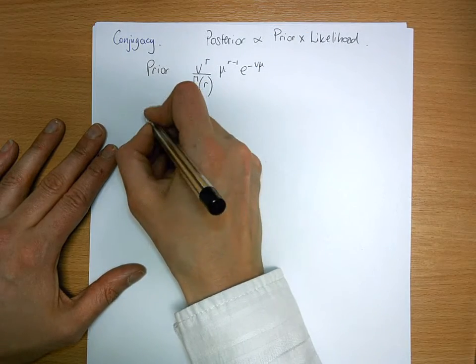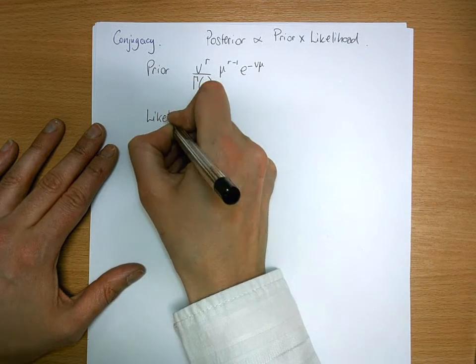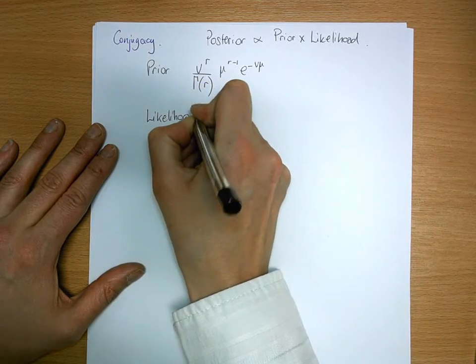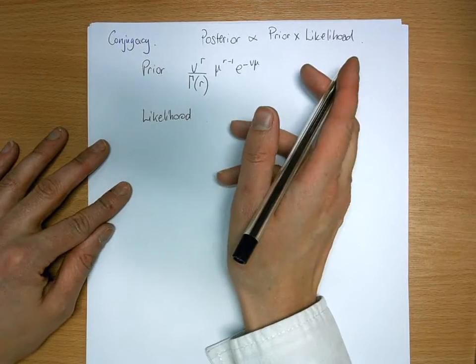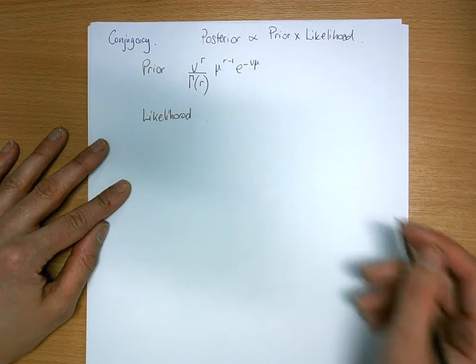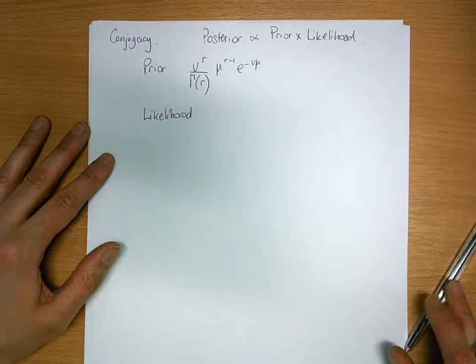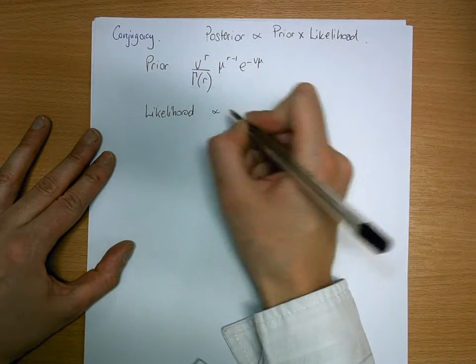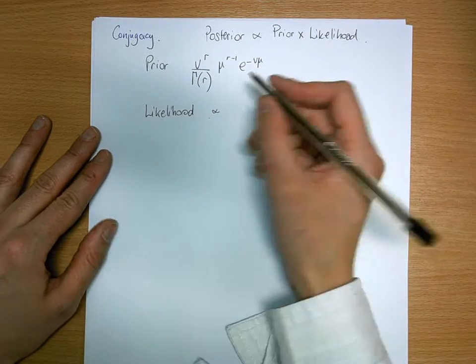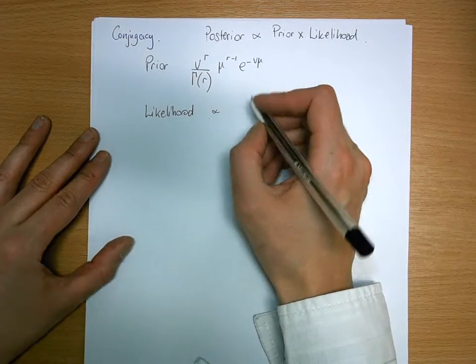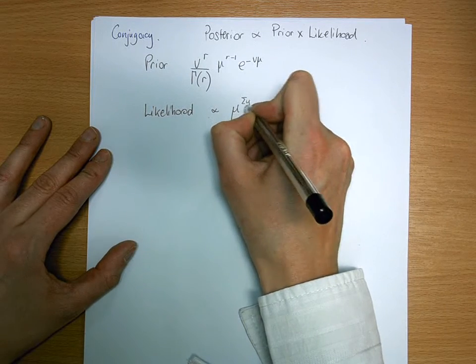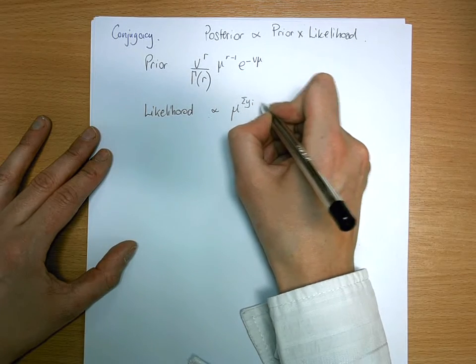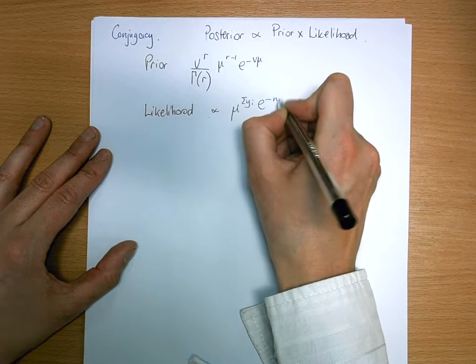And our likelihood, we're just going to show our likelihood proportional to, because I don't like having to carry around that product of one over the factorial business. So we're just going to say it's proportional to, we'll worry about our constants of proportionality later: mu to the sum of yi, e to the minus n mu.